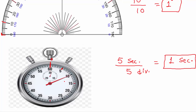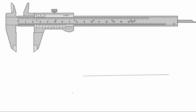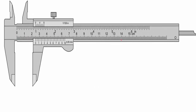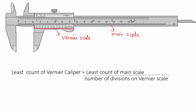Vernier calipers was invented in 1631 by French mathematician Pierre Vernier. This device is used to measure internal and external diameter of several objects. Vernier calipers has two scales: the longer scale is called the main scale, and the smaller scale is called the Vernier scale. The formula to find the least count is: least count of main scale divided by number of divisions on the Vernier scale.